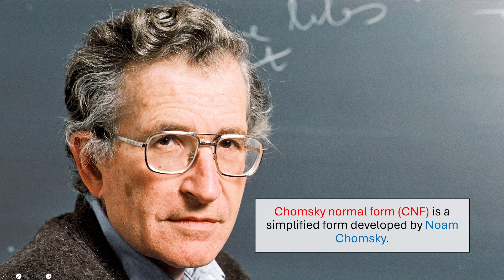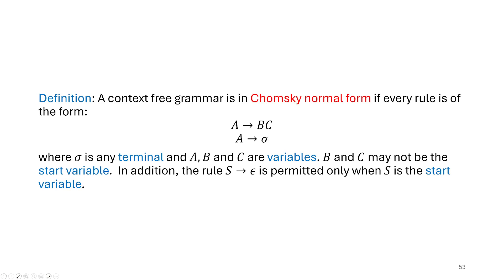This is just one kind of normal form for context-free grammars — there could be other kinds, but this is the kind we're going to study today. The rules for Chomsky Normal Form require that a grammar have certain structure for its rules, and specifically it only permits two kinds of rules.